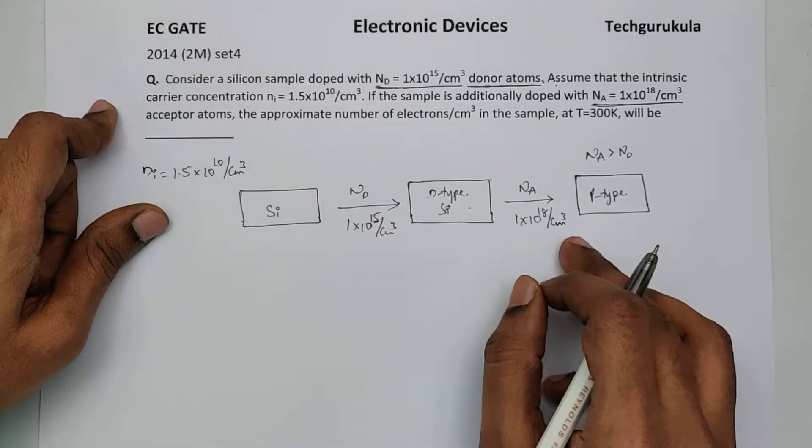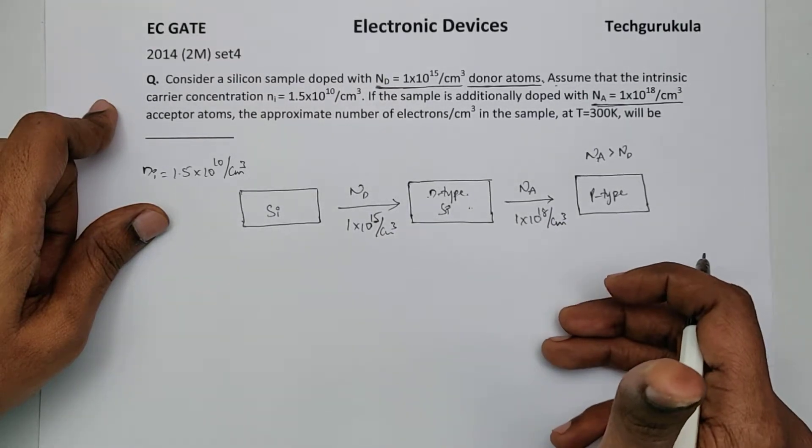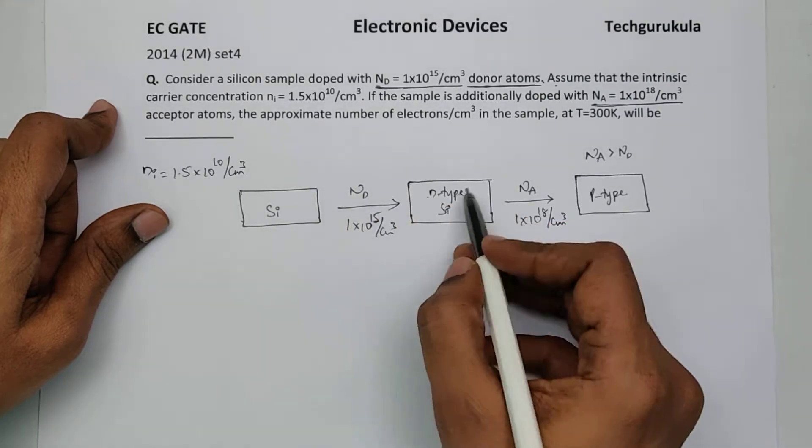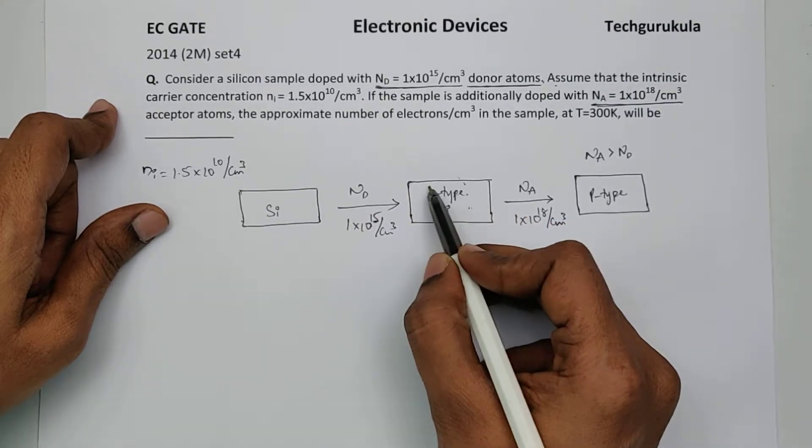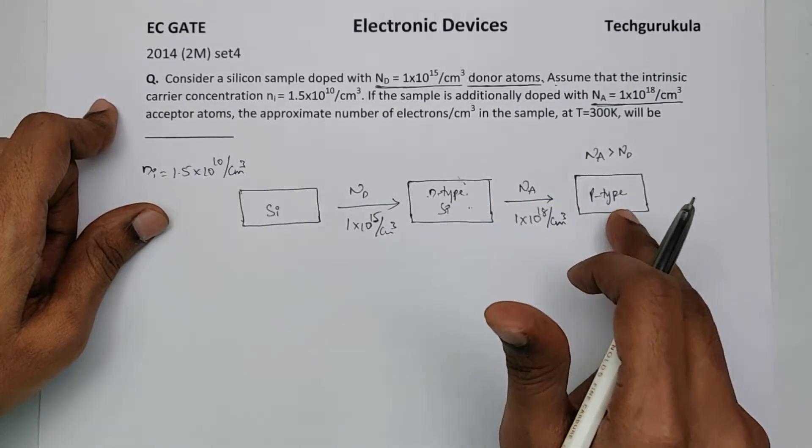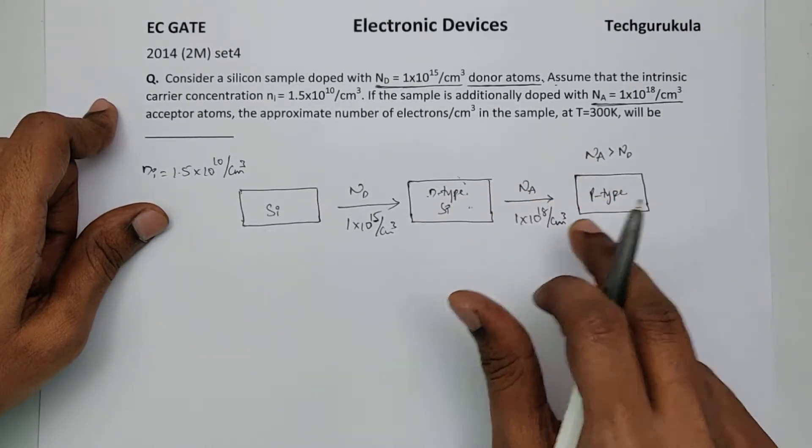Now this kind of doping is called compensated doping. We have discussed in the theory videos that if a particular type of semiconductor is taken and there is another kind of doping done on top of it to make it a different kind of material, that's called compensated doping.